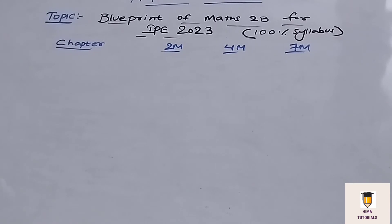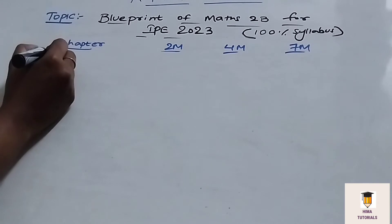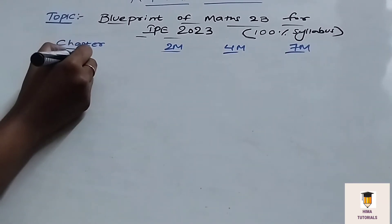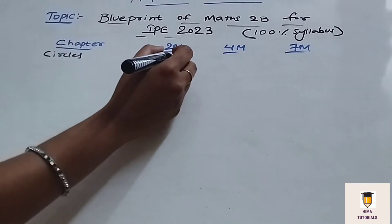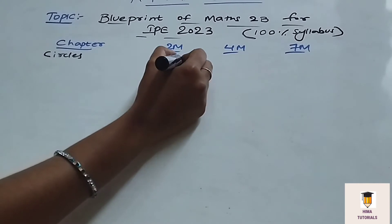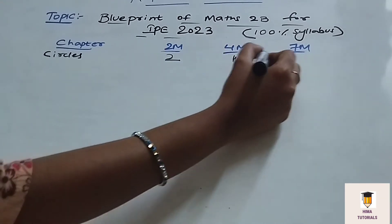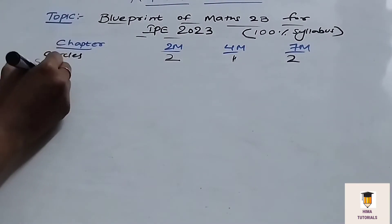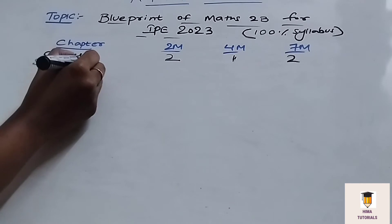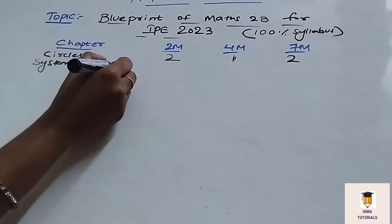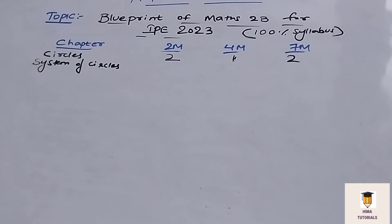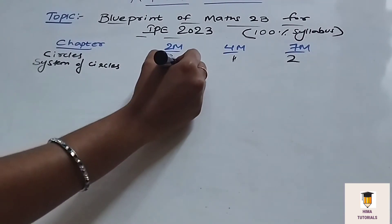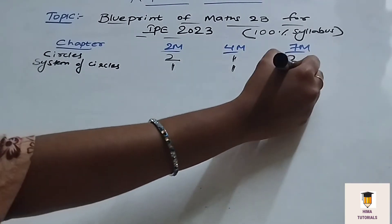Now for Maths 2B, the first chapter — we will get 2 four-mark and 2 seven-mark questions. In the Circles chapter, we will get 2 two-mark questions, 1 four-mark, and 2 seven-mark questions. Coming to the next chapter, System of Circles — in System of Circles, we will get 1 two-mark and 1 four-mark question.